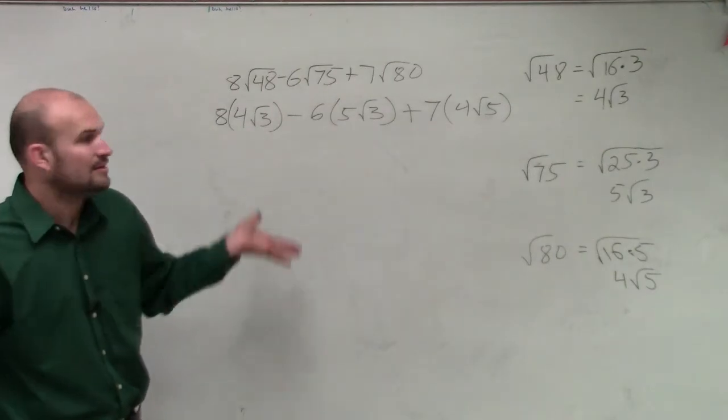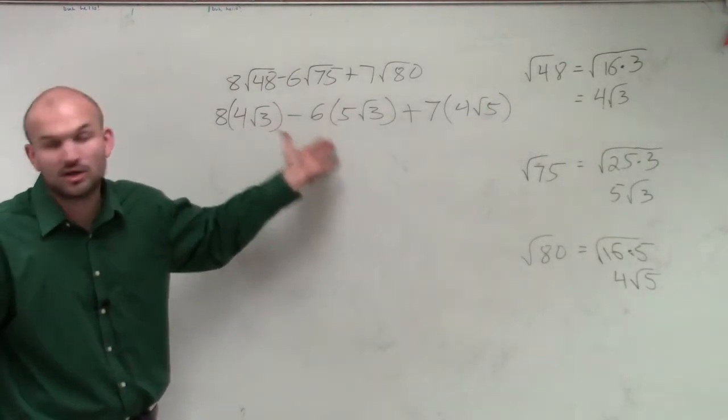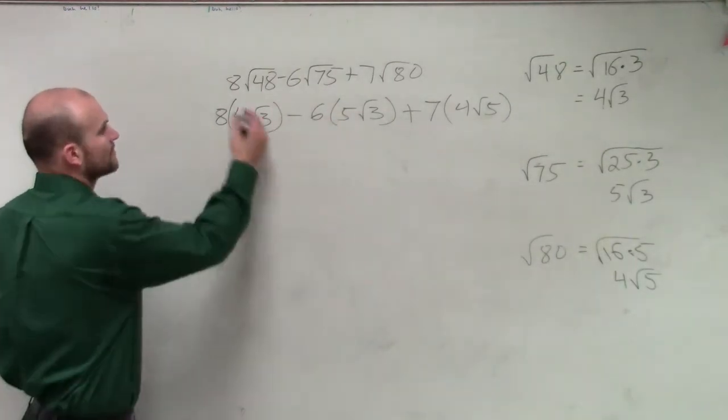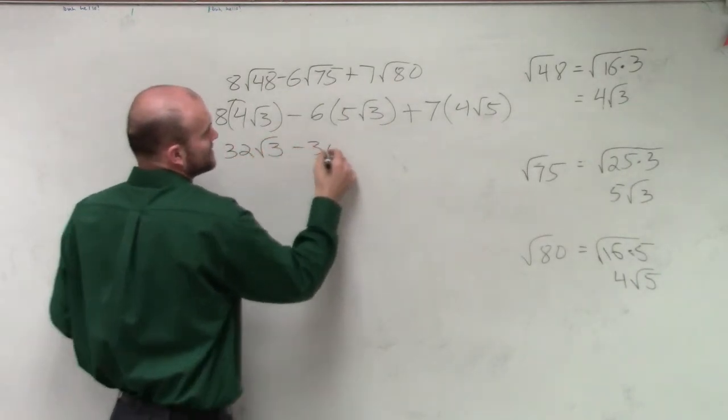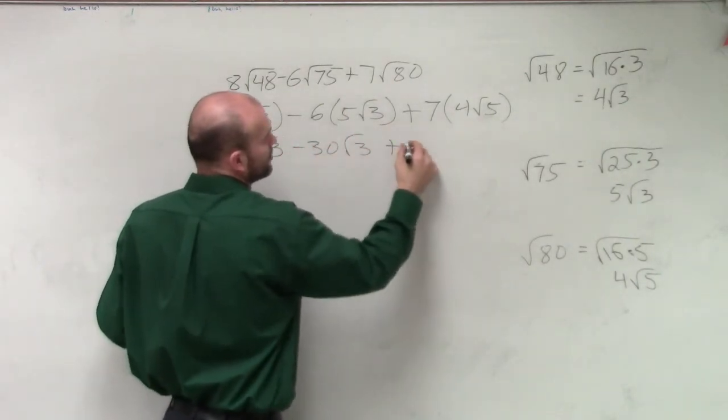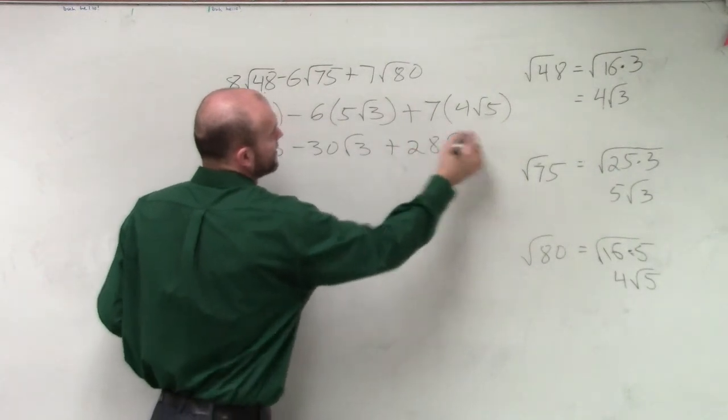Now remember, we can only multiply numbers by numbers. You can't multiply a number inside of your square root. So therefore, we get 32 square root of 3, minus 30 square root of 3, plus 28 square root of 5.